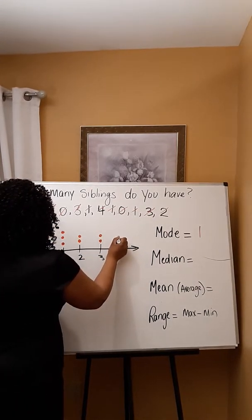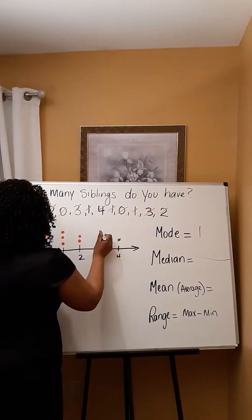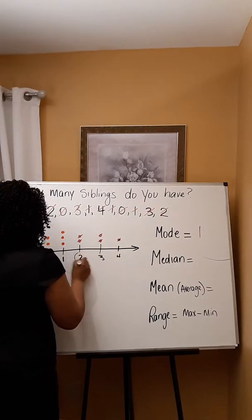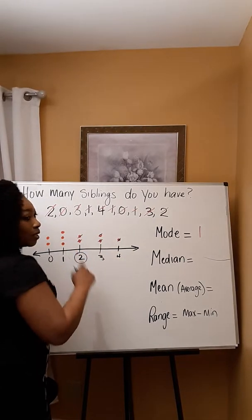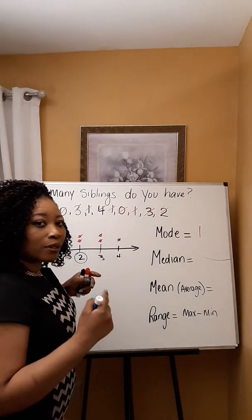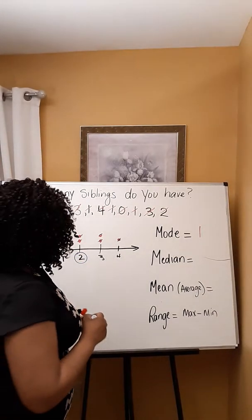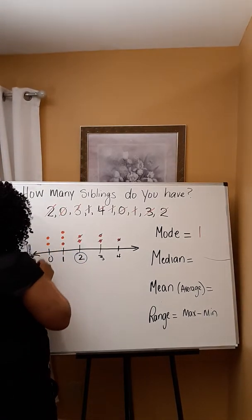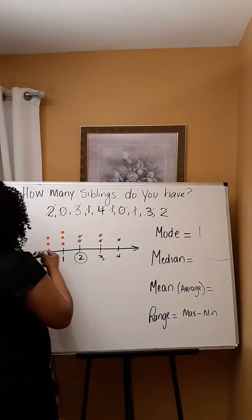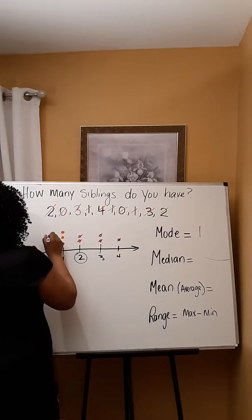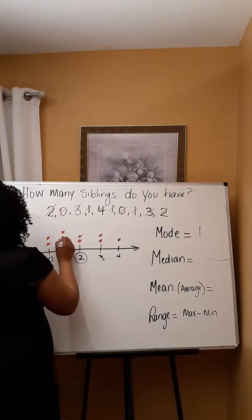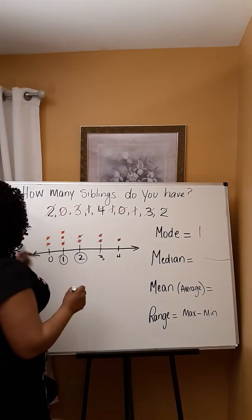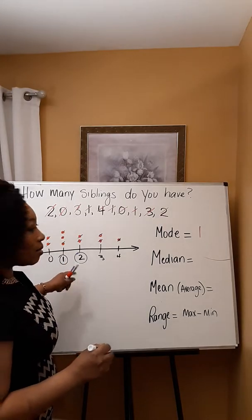I'm going to count off my five numbers and circle the number below: one, two, three, four, five — so two is going to be one of the numbers in the middle. Then counting from the other side: one, two, three, four, five — so the other middle number is one.